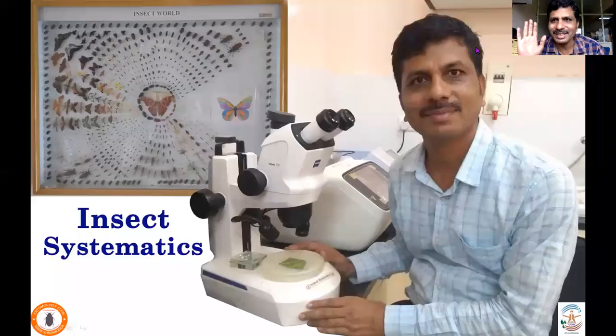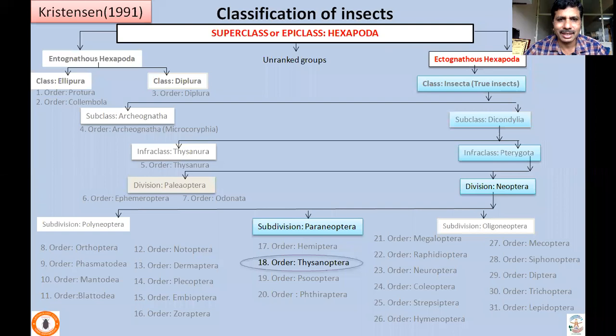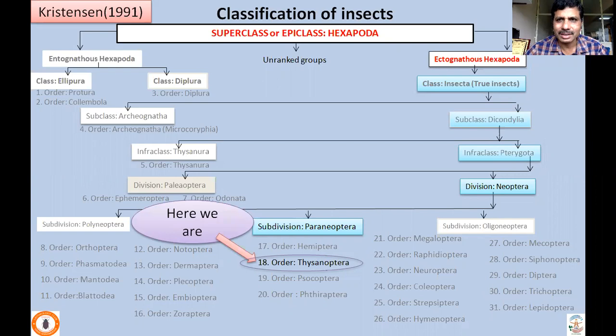Welcome back to the Insect Systematics lecture series. We are discussing the general characters of orders and economically important families. In the last lecture we were discussing Diptera — its suborders and economically important families. In this lecture we'll be dealing with Order Thysanoptera, commonly called thrips.